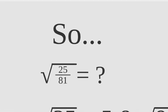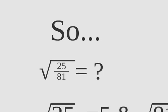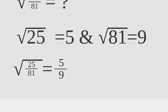Now, what about something like this? We take the square root of 25 over 81. Well, that's pretty easy. All you got to do is take the square root of 25, which is 5, and the square root of 81, which is 9, and it is simply 5 ninths.